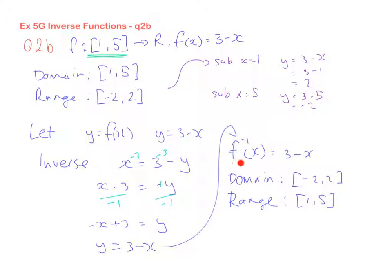So we've now got our inverse function, which just happens to be the same as our original function. We've got our domain and ranges that have swapped around. So that's where the main difference is in this one. So there you go. Hopefully that will help.